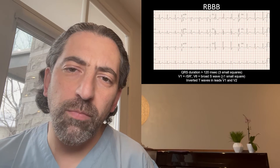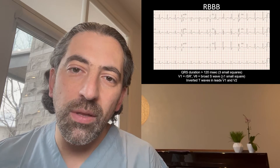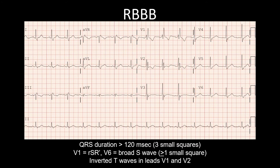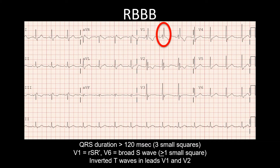In right bundle branch block, depolarization proceeds normally down the left bundle. However, the terminal portion of the QRS consists of depolarization of the right ventricle through myocyte-to-myocyte conduction, which is a slow process, creating a terminal positive deflection in lead V1 giving you an RSR' complex that looks like rabbit ears, and giving you a terminal negative S wave in lead V6.